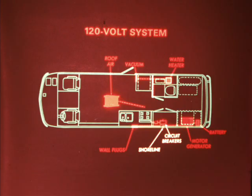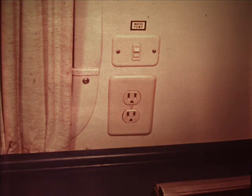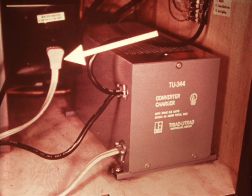The power cord is connected to circuit breakers inside the vehicle. When the cord is plugged in, 120 volt current travels from the plug to the circuit breakers and then to the water heater switch, roof air conditioner if the vehicle is equipped with one, and the 120 volt household circuits. The household circuits provide wall receptacles for kitchen appliances, TV sets, and so on. They also provide power for the operation of the optional built-in vacuum cleaner.